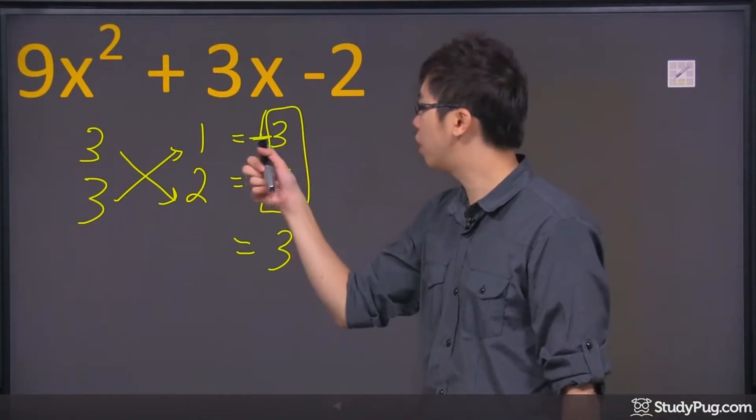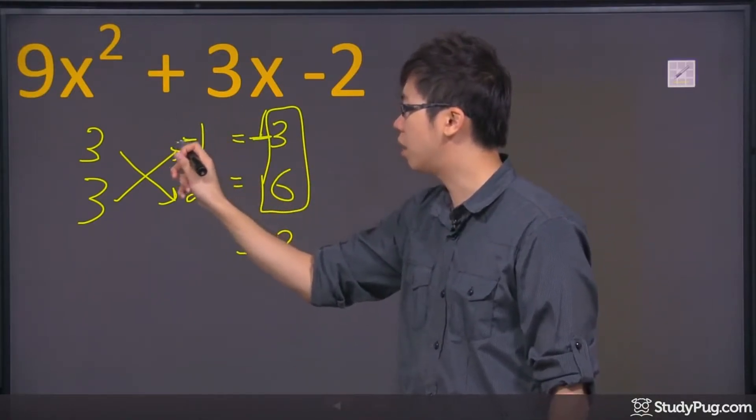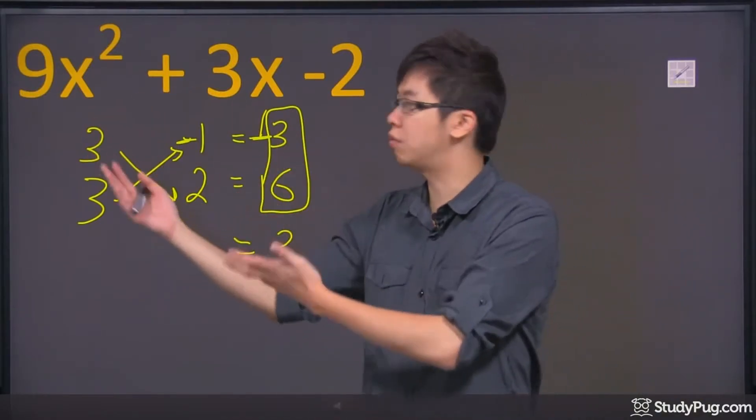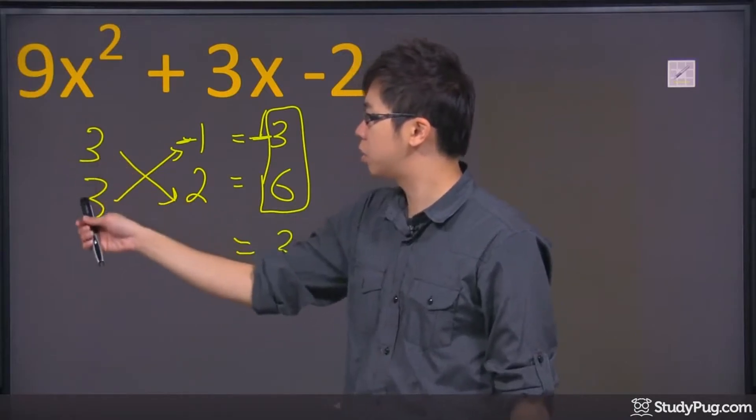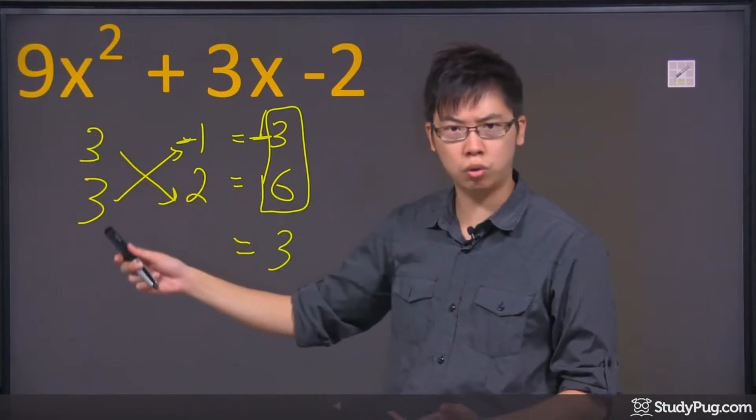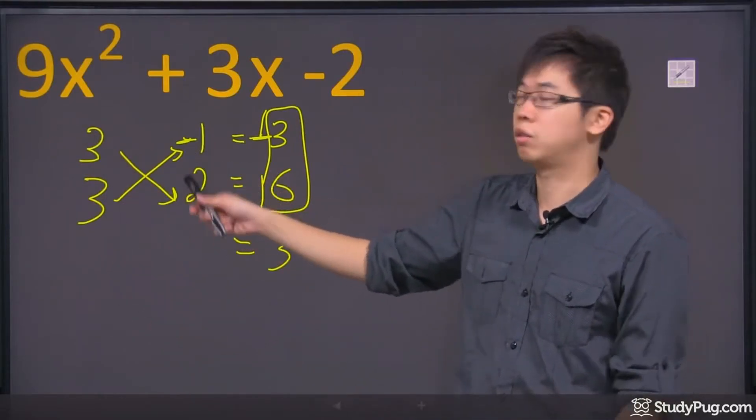So where does the negative come from? It has to come from the negative 1 at the front. Now, how does it make sense? Well, let's all go back to the very beginning. These two numbers here are the factors of 9. So what that means is 3 times 3 gives you the 9, which is true.